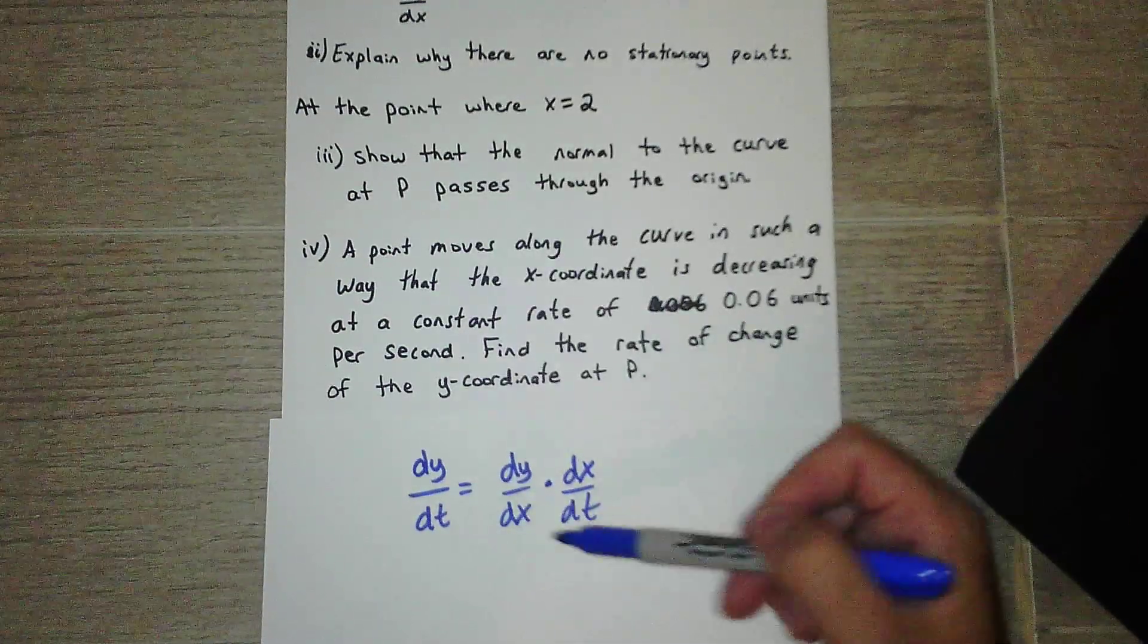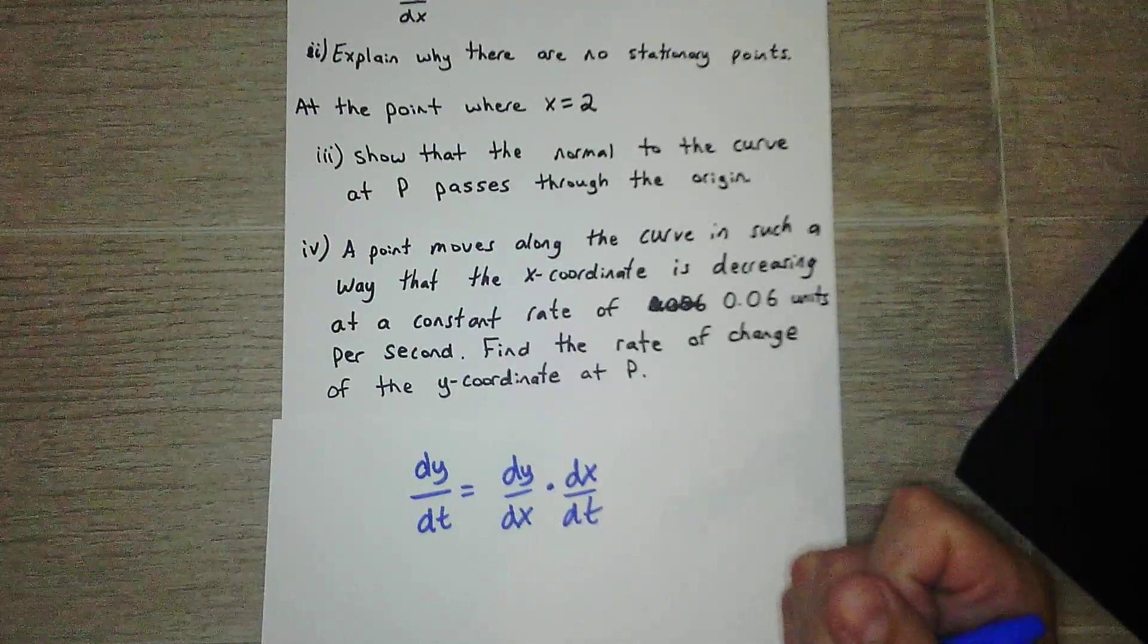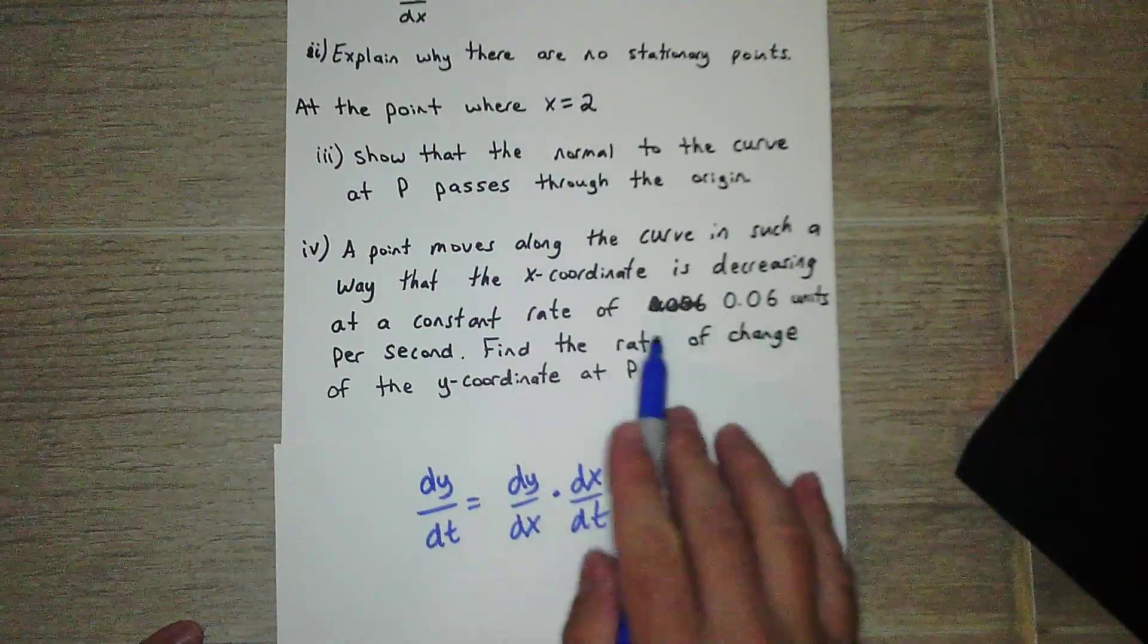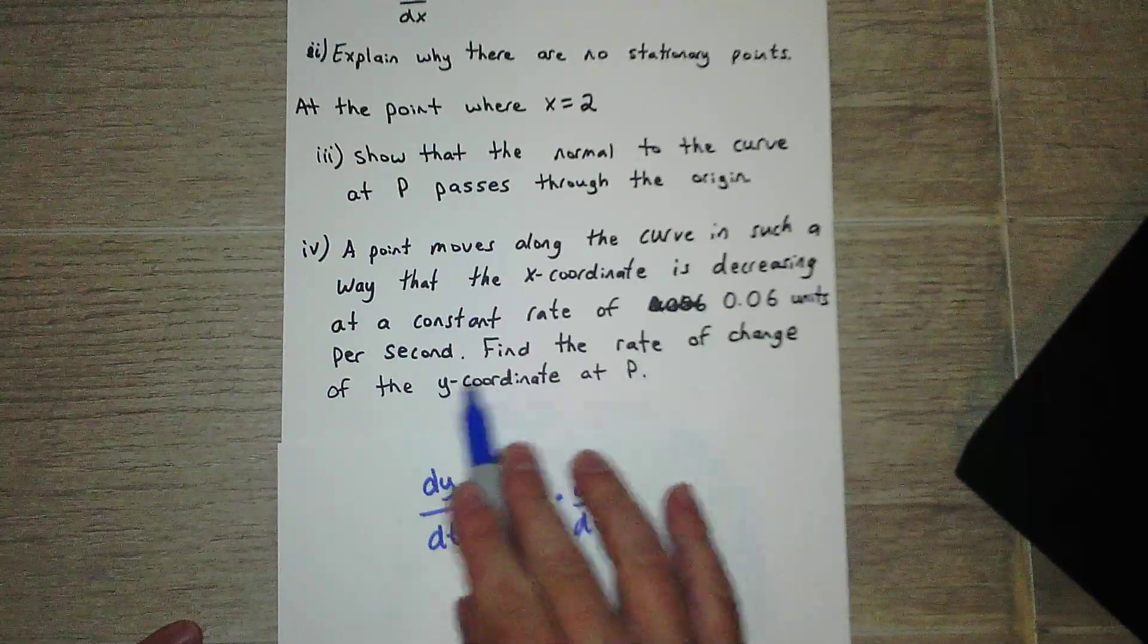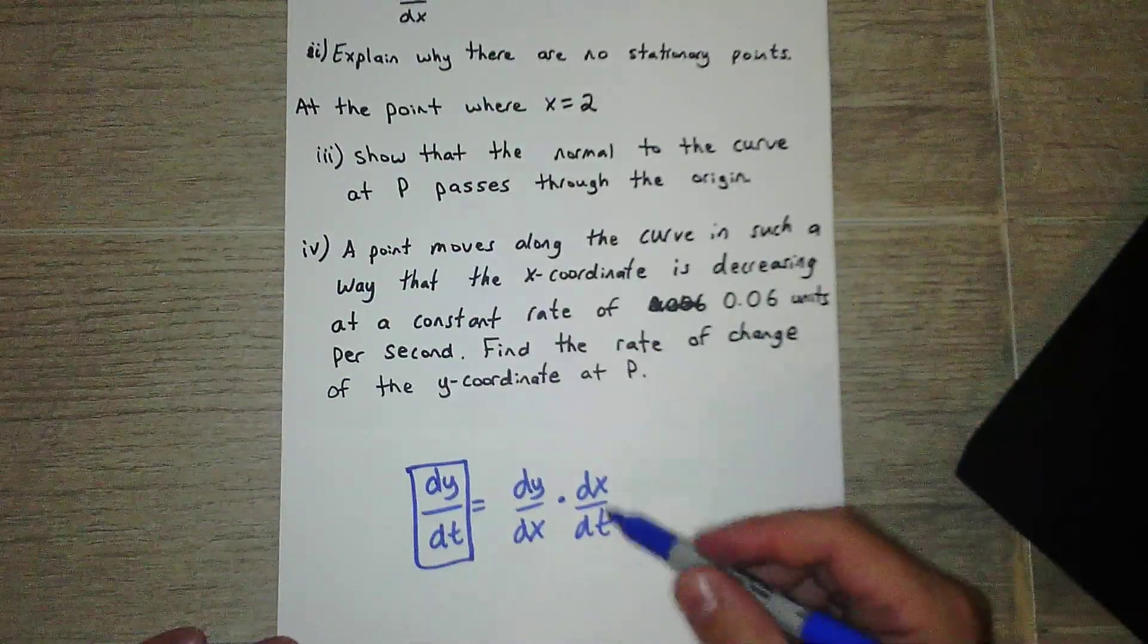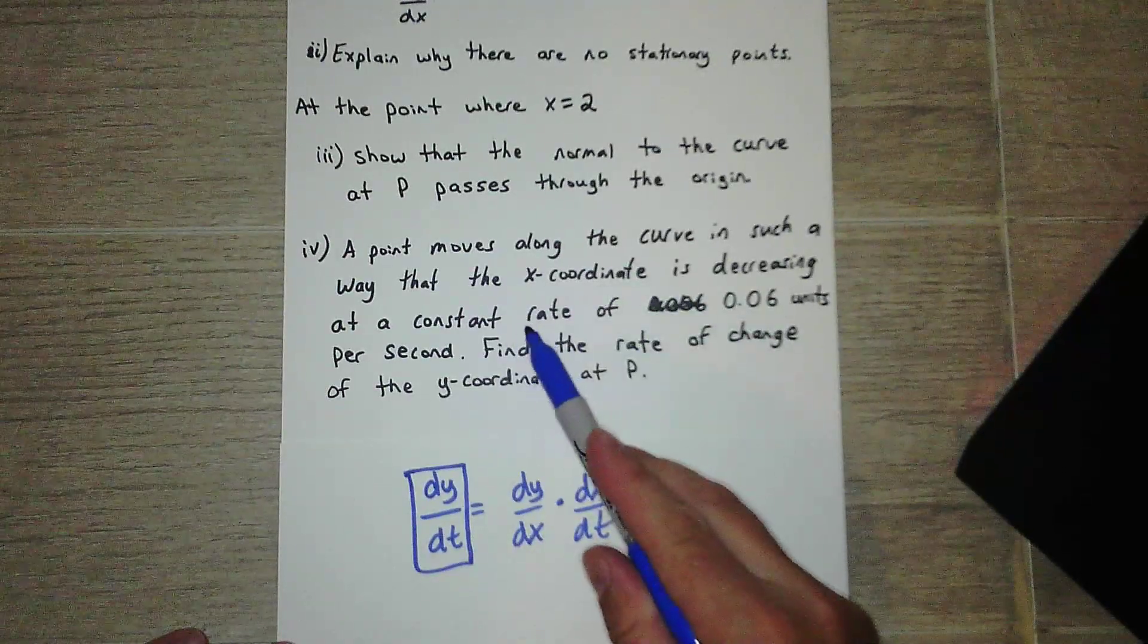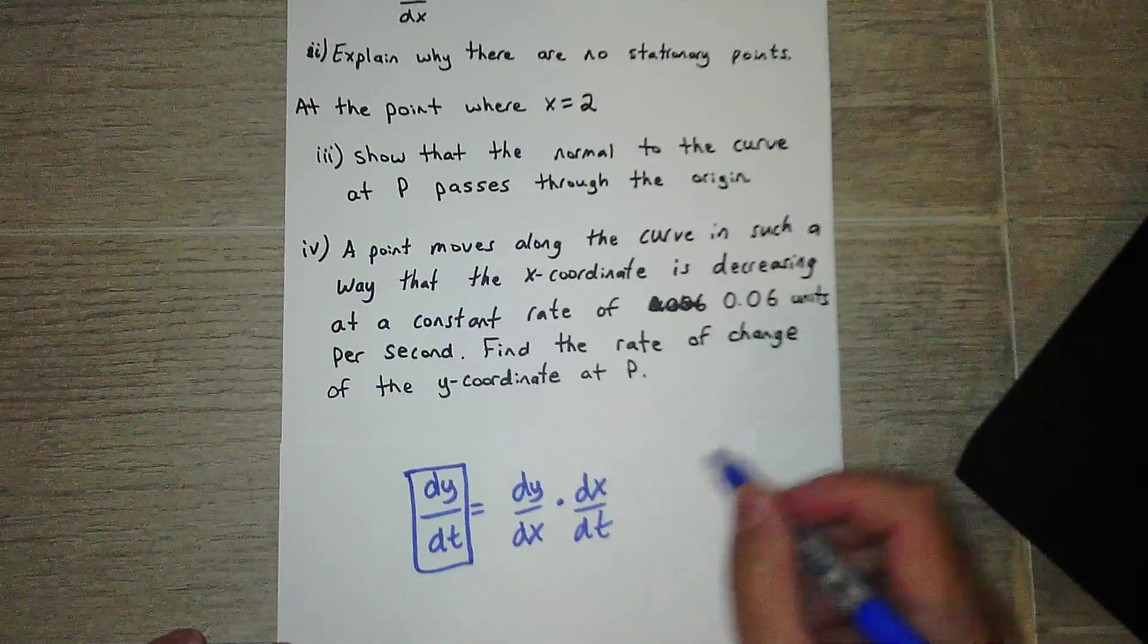So dy/dt equals dy/dx times dx/dt. One of these is given, one of these we have to find, and one of these is found by taking the derivative of something. So what do we want to find? Find the rate of change of the y coordinate. Rate of change is dt of the y coordinate. So we want to find this, which means we know these two or we can find these two relatively easy. So what is this? This is constant rate, so that's rate of the x coordinate. That's dx/dt. So we have that.